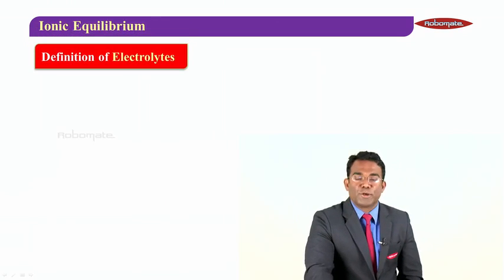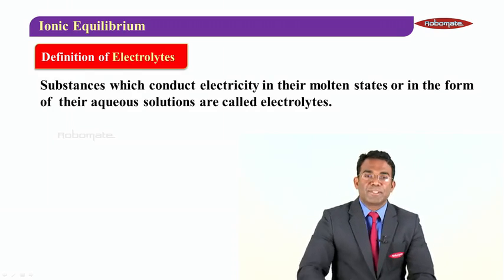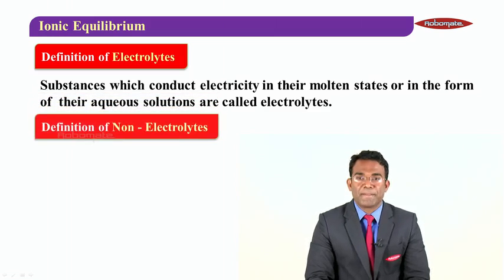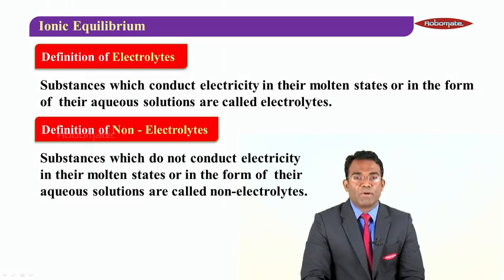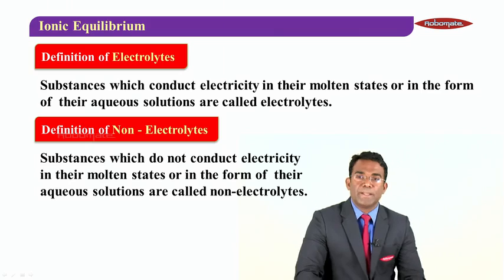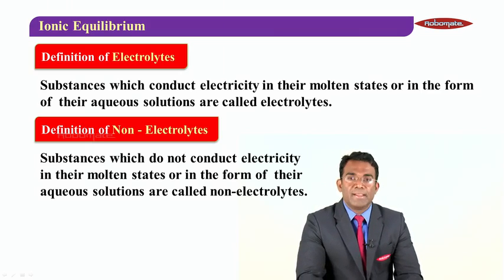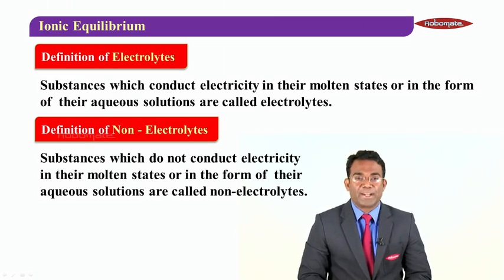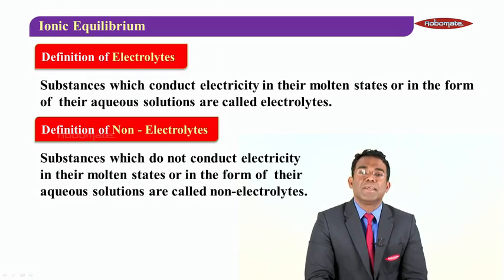Let's look at the formal definitions. Electrolytes: substances which conduct electricity in their molten state or in the form of their aqueous solutions are called electrolytes. Non-electrolytes: substances which do not conduct electricity in their molten state or in the form of their aqueous solutions are called non-electrolytes. We already discussed examples for both of them.